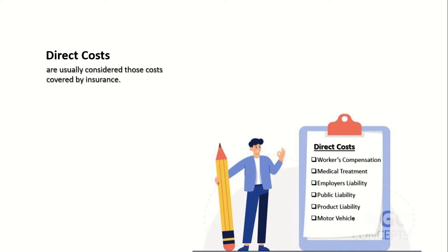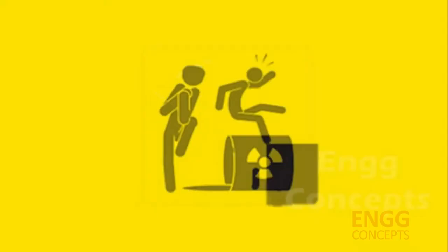Direct Costs for accidents are usually considered those costs covered by insurance: Workers Compensation, Medical Treatment, Employers Liability, Public Liability, Product Liability, Motor Vehicle, etc. — all of these come under Direct Costs.